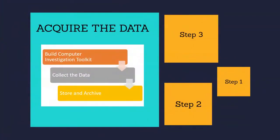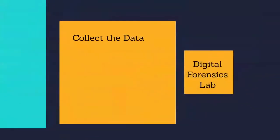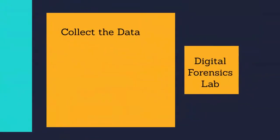The second step is to collect the data. Data collection of digital evidence can be performed either locally or over a network. Acquiring data locally has the advantage of greater control over the computers and data involved. Other factors such as the secrecy of the investigation, the nature of the evidence that must be gathered, and the timeframe will ultimately determine whether the evidence is collected locally or over the network.